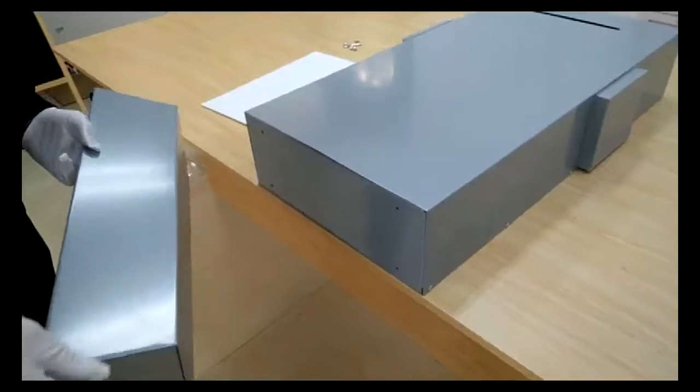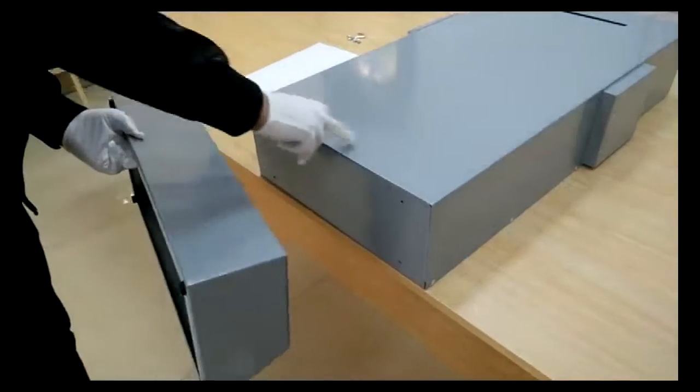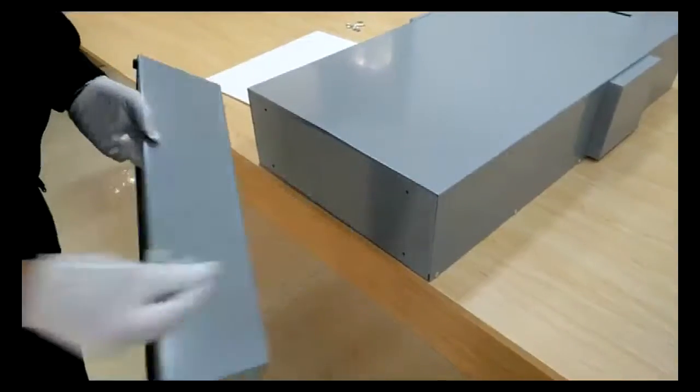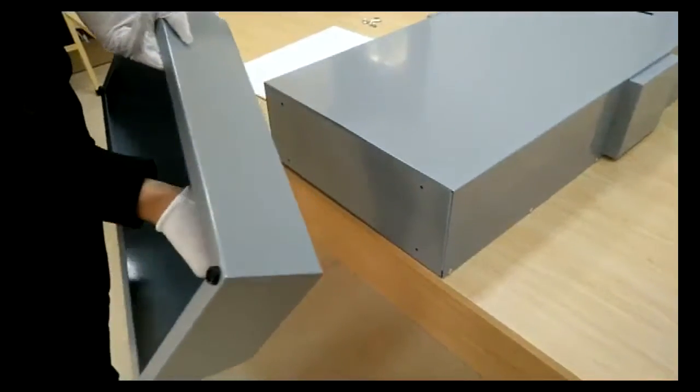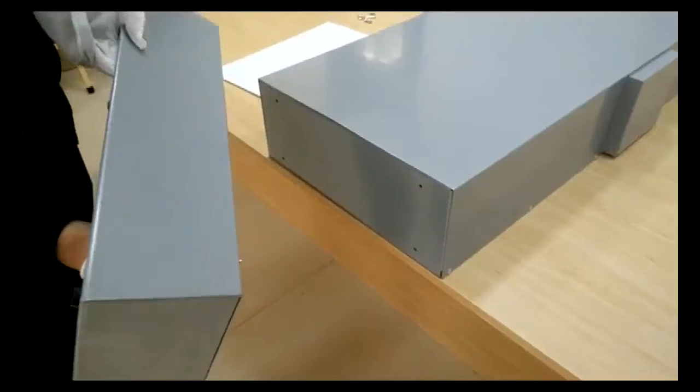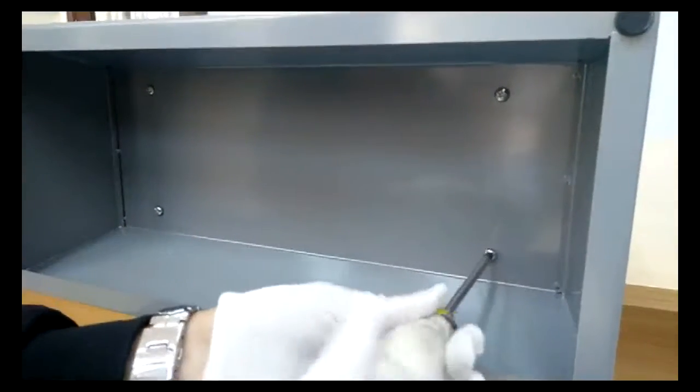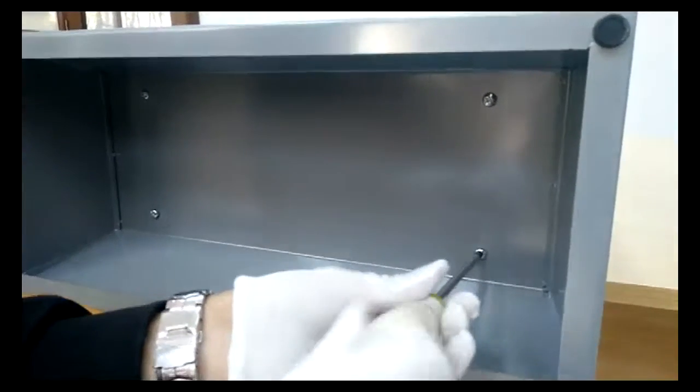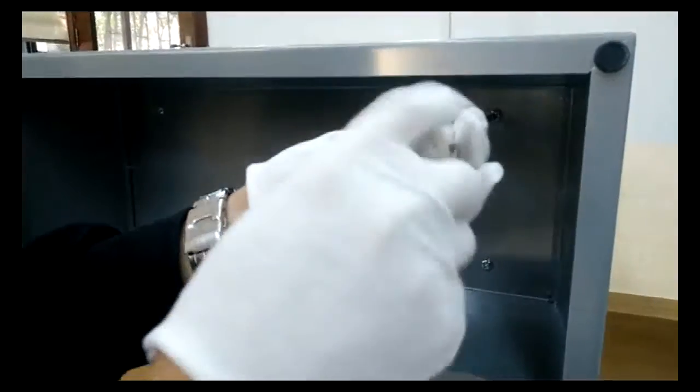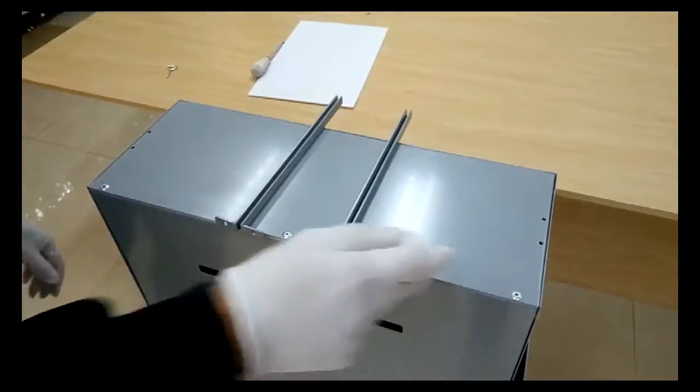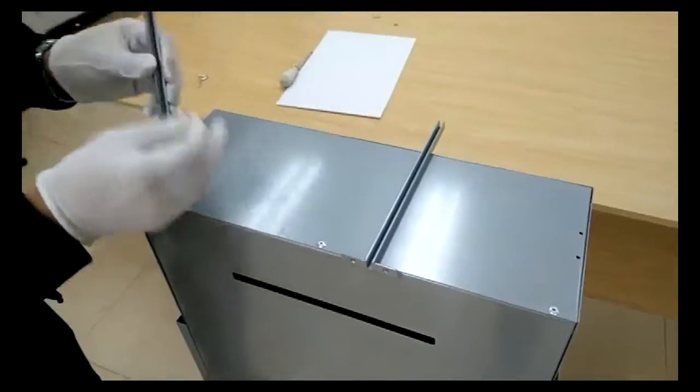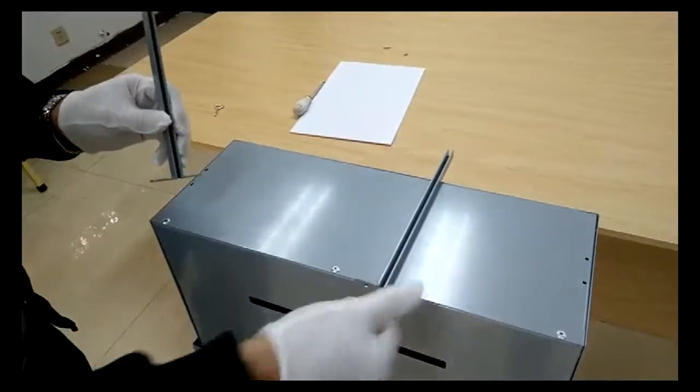To assemble this together, you want to screw the base onto the bottom of the body. The hole on the bottom of the box is already pre-threaded. Simply use any household Phillips screwdriver or an office power drill if you have one to fasten the screws.